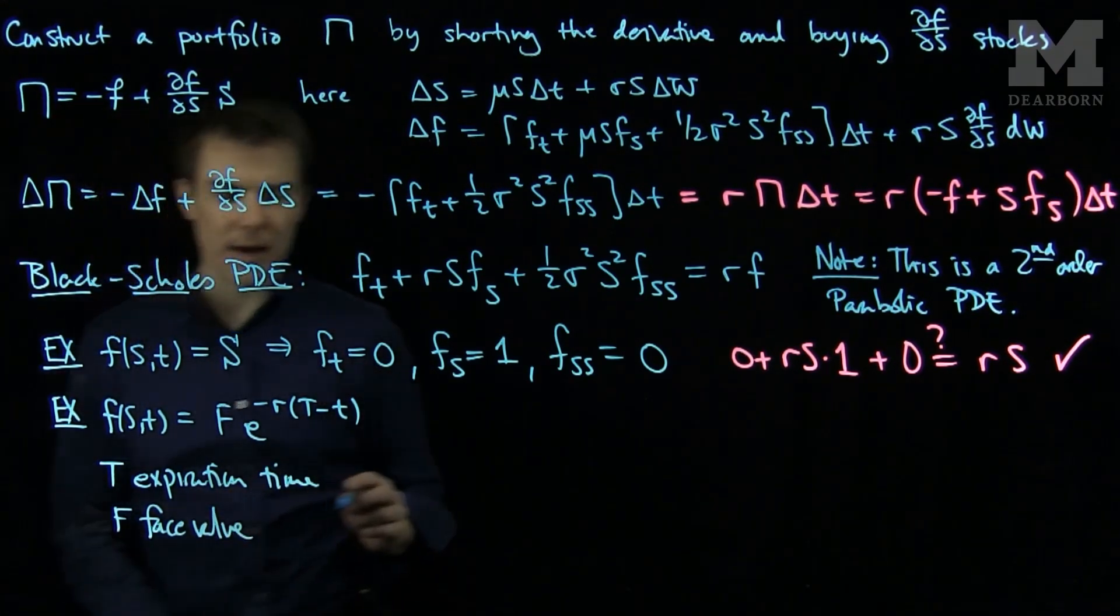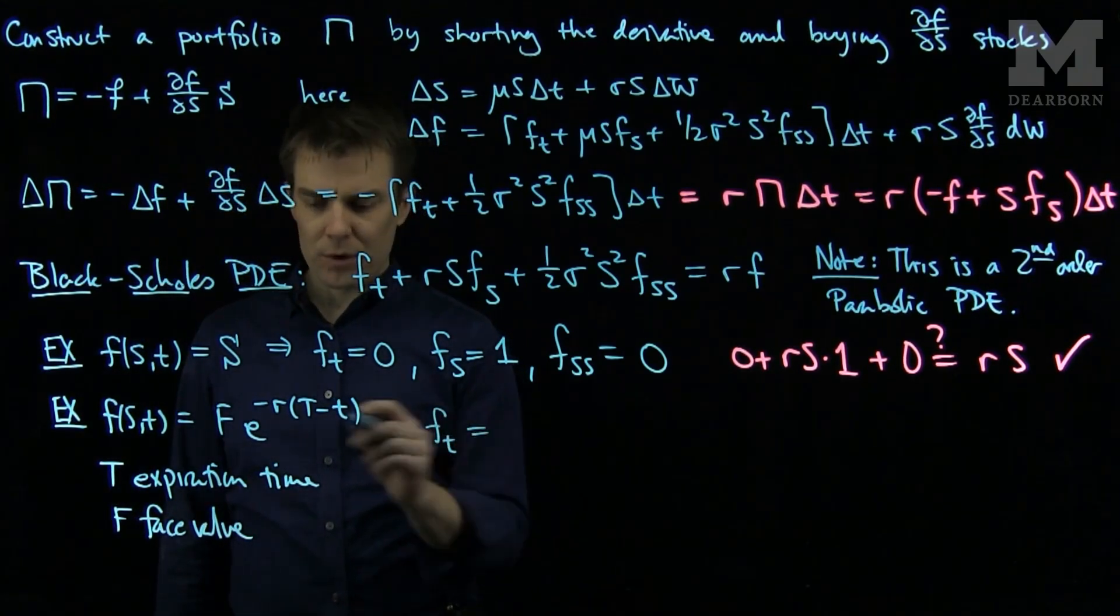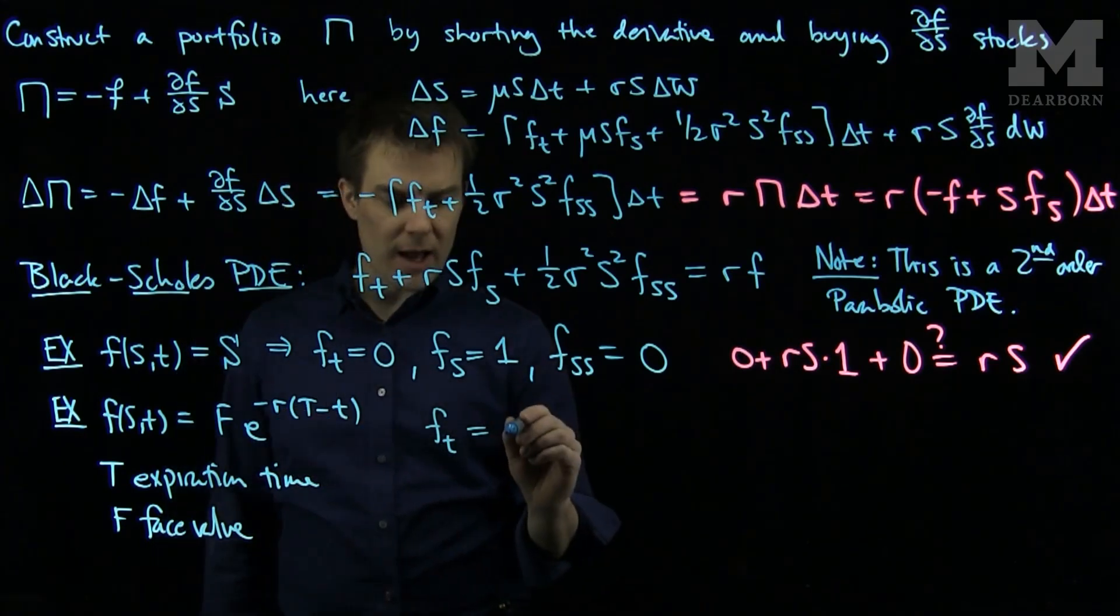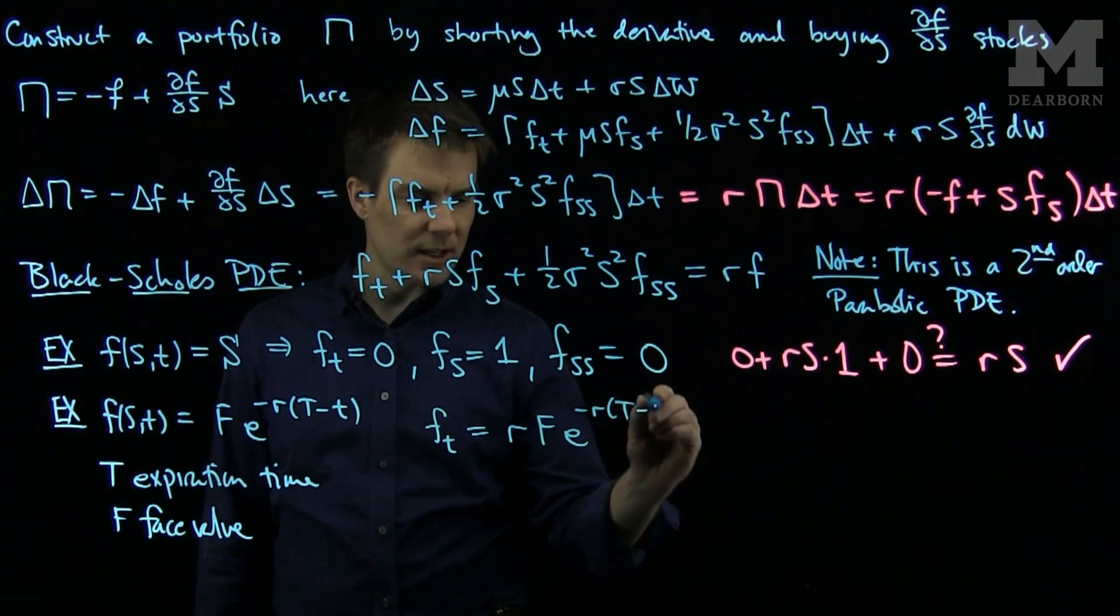So we're thinking of this as a bond. And so we can see from this that ft, if I compute the derivative of this function with respect to t, I will have an rFe^(-r(T-t)).